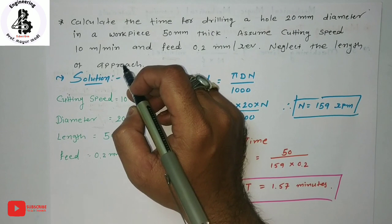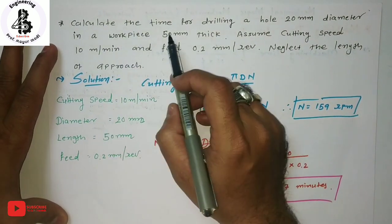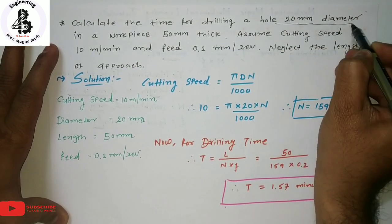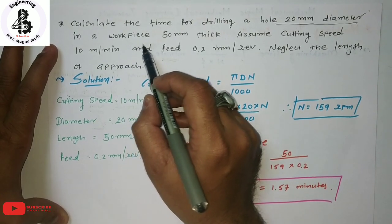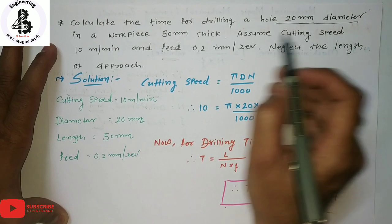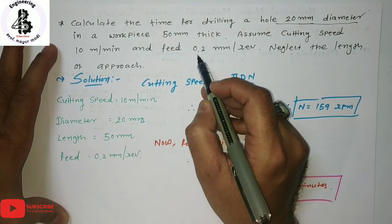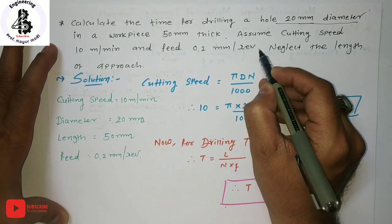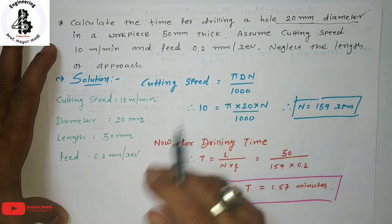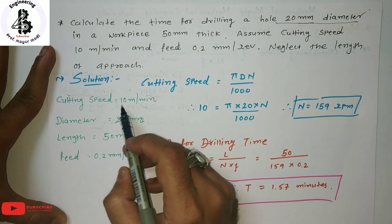Let us see the calculating part of drilling operations. Given data: calculate the time for drilling a hole of 20 mm diameter in a workpiece of 50 mm thickness. Assume the cutting speed is 10 meters per minute and feed equals 0.2 mm per revolution. Neglect the length of approach.